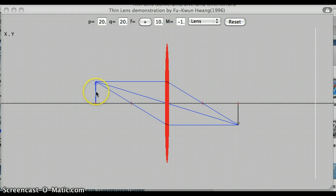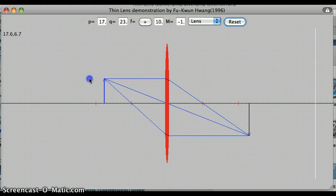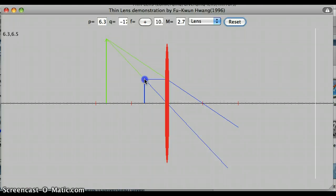And just like the FET simulation that we played with, you can change the position of our object. We can have real images or here with the green rays, these are the imaginary principal rays being traced back to show us a virtual image here in green.